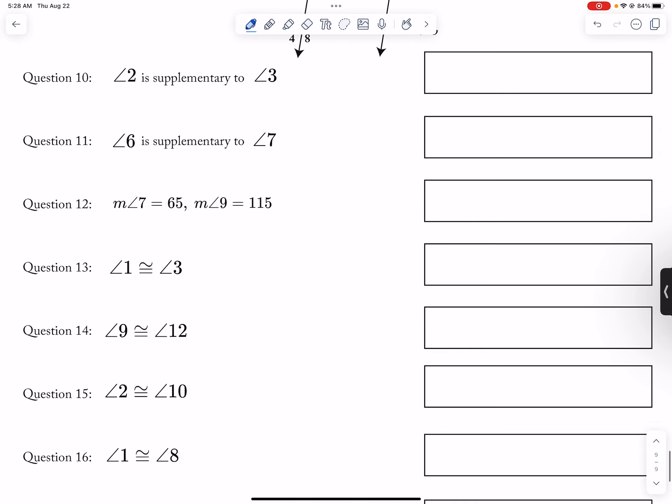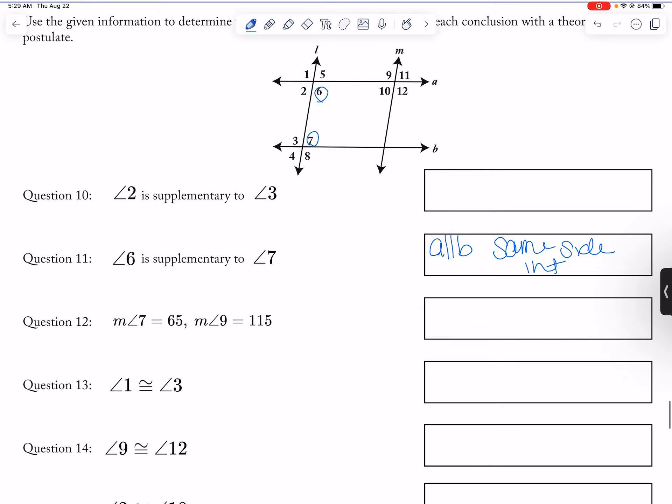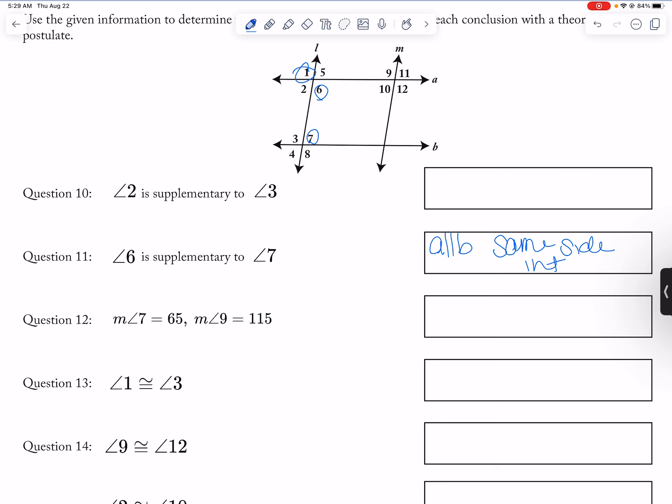Okay. 11, A is parallel to B. And this is same side interior. And then 13, 1 and 3 are congruent. So that makes A parallel to B. And this is corresponding angles theorem.